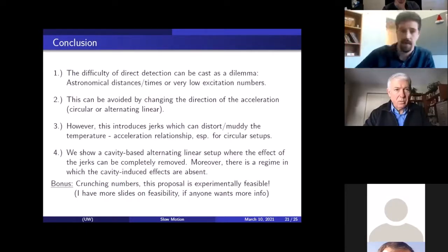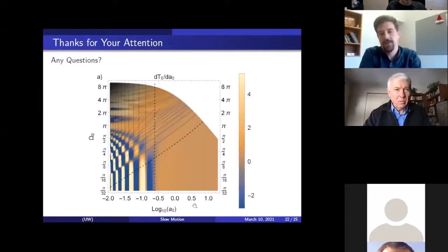So in conclusion, I've cast the difficulty of detecting the Unruh effect as a dilemma. We need astronomical distances or timescales or we need very low excitation numbers. This can be avoided by changing the direction of the acceleration in an alternating or linear way. But either way, this introduces jerks which can muddy or distort the temperature acceleration relationship, especially for the circular setups, as I've argued. What we've shown is a cavity-based alternating linear setup where the effects of these jerks can be completely removed and moreover, in this regime, the cavity-induced effects are also absent, although they do appear where you sort of expect them to. As a final note, if you plug numbers into this formalism that we've been talking about, the proposal does seem to be experimentally feasible as well. And I've got more slides on that if anybody wants to know. So thank you for your attention. We have any questions.